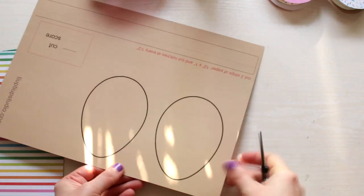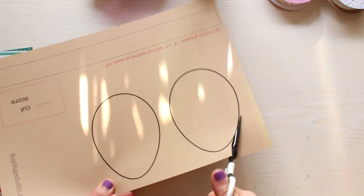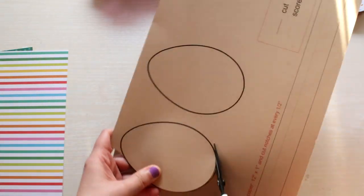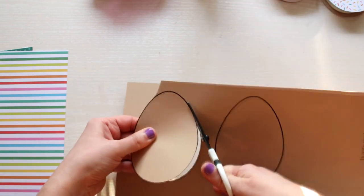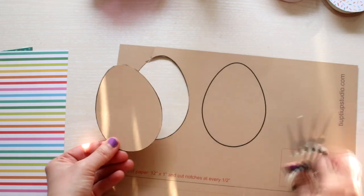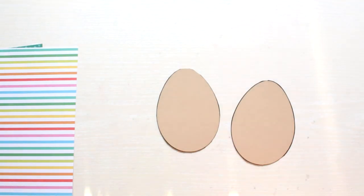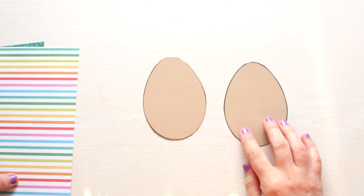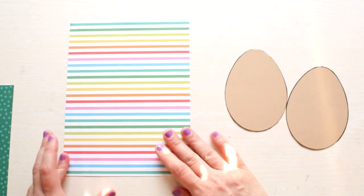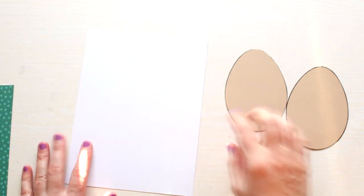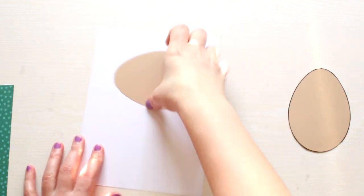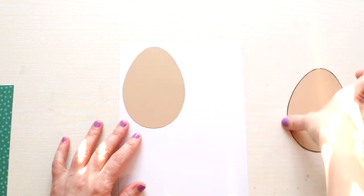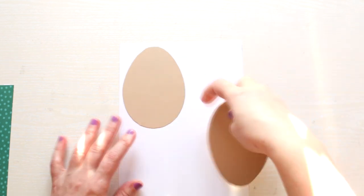Cut out the egg shaped templates. After cutting them out, take your patterned paper, turn it under reverse. If you have a pattern like mine with the stripes, decide first which way your pattern is going to go. Then arrange the template onto the reverse of the patterned paper.